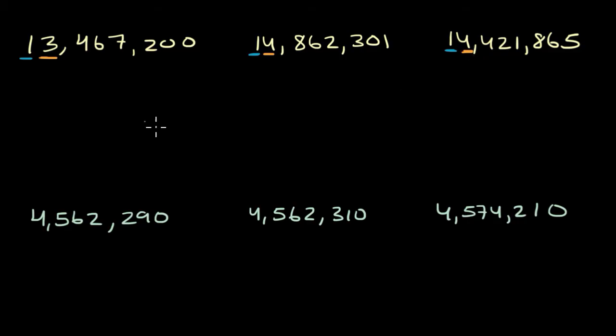And remember, we're ordering from greatest to least. So we immediately see when we look at the millions that this has the least number of millions, this 13 million here. We don't even have to look at anything else. So we already know that the number here on the left is the smallest of the numbers.